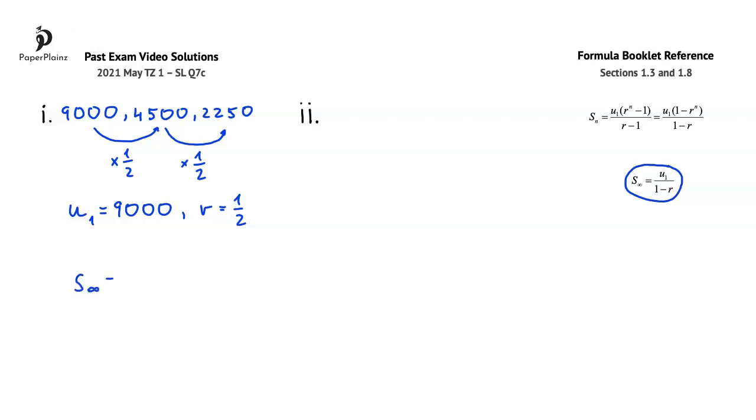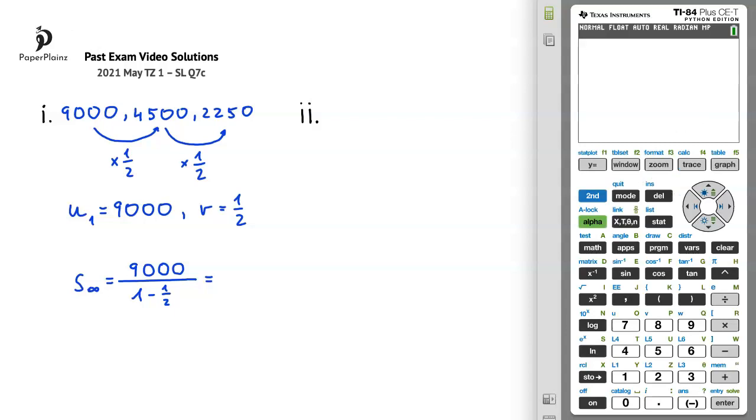Substituting, we get that the sum to infinity is equal to u1, so 9,000, divided by 1 minus r, so 1 minus 1 half. Let's use our calculator to find this sum. I will press alpha, y, and enter to put in a fraction. In the numerator, I will write 9,000, and in the denominator, 1 minus 1 half, or 1 minus 0.5.